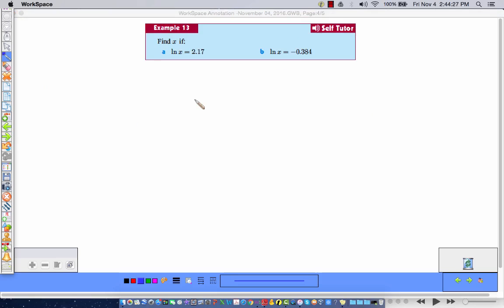Find x if the natural log of x is equal to 2.17. Natural log of x equals 2.17. So remember, the base here is E. So we are in logarithmic form. And I can go to exponential form to solve this. So E to the 2.17 is going to be equal to x. And if you take your calculator and take E and raise it to the 2.17 power, you are going to get x approximately equal to 8.76. Correct to three significant figures.